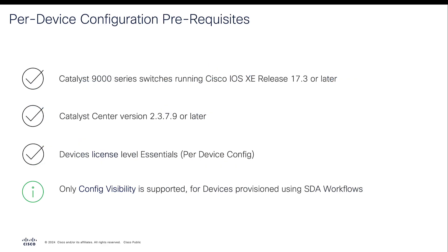There are some prerequisites for the per device config feature to work. This feature is available for Catalyst 9000 series switches running IOS XE version 17.3 or above. The Catalyst Center version required is 2.3.7.9 or later. The device license required is DNA Essentials. For devices that are already configured with SD Access intent, the per device config feature will only provide visibility of the layer 2 configuration for those devices.